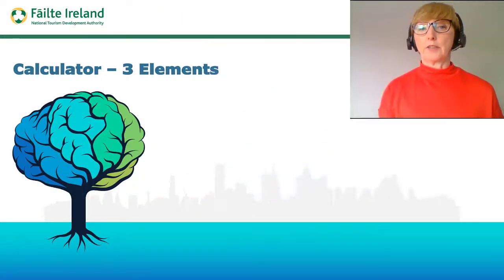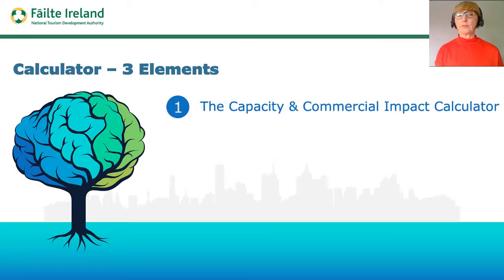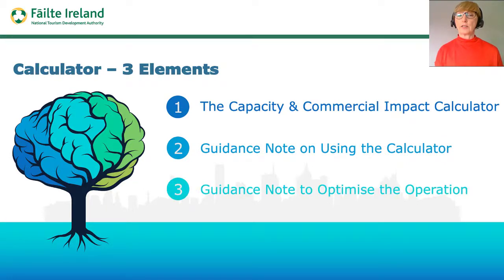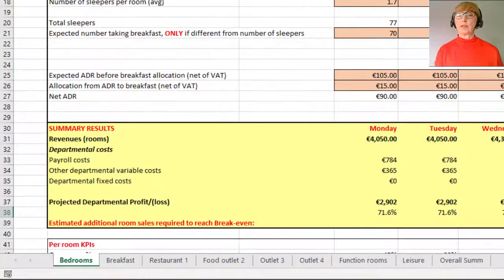There are three elements to the calculator. The first is the calculator — the Excel template itself. The second is a guidance note on actually using the calculator and instructions on how to do so. And then the third element is a guidance note on ways you can actually optimize the operation. On the first element, the calculator itself, there's an Excel template with a number of different tabs that will cover off the various aspects of your business.